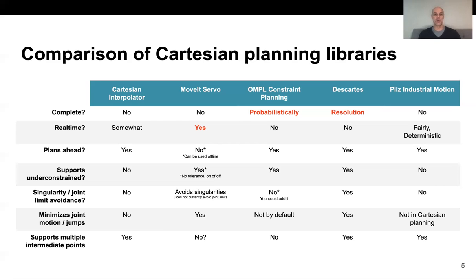Next up, we have MoveIt Servo, which used to be called Jog Arm. It's not a complete planner, but it is real-time — so for real-time applications it is sort of the right tool to use. It supports under-constrained systems and tends to avoid singularities. Next up, we have OMPL constraint planning, which is the meat of this talk. It provides probabilistic completeness, meaning that as time goes on, eventually with probability one it will find a solution. It does not provide any real-time guarantees, but it does plan ahead. While it doesn't out-of-the-box avoid singularities or joint limits, we can model these as additional virtual obstacles in the scene and thereby avoid these situations.